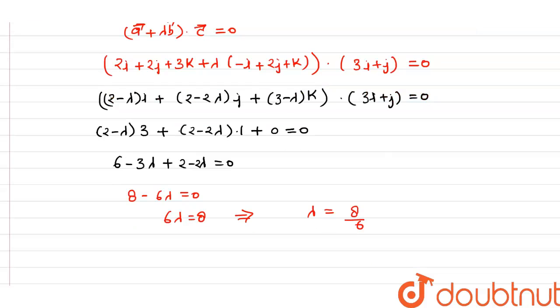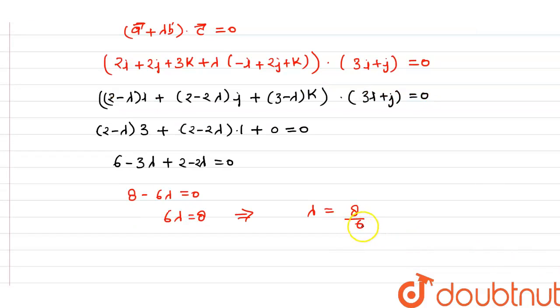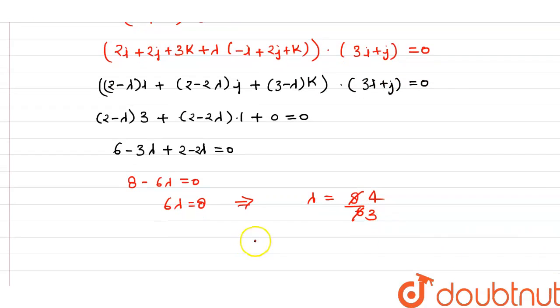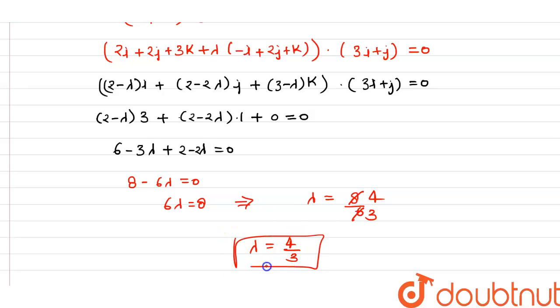When we simplify 8 over 6, we cancel out by 2, giving 4 over 3. So the value of lambda is 4 by 3. This is our answer. Thank you.